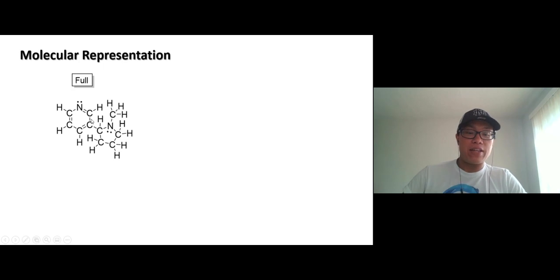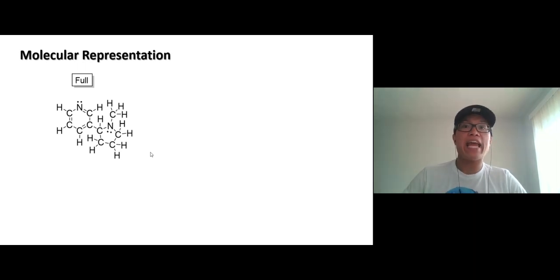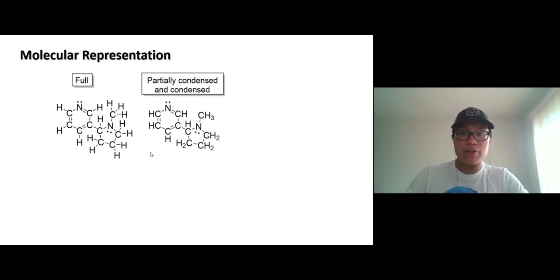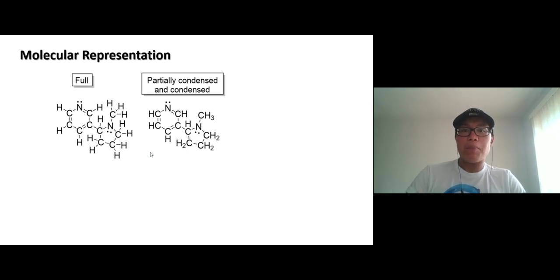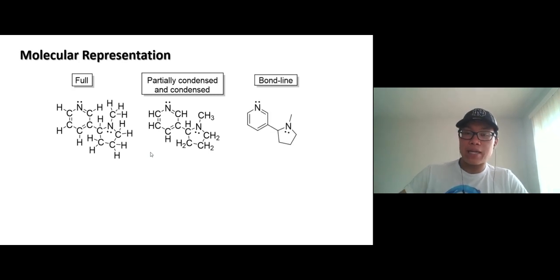A larger molecule gets even more complicated than that. So we try to come up with a representation of the molecule that's more convenient and takes less time to draw. We call it a partially condensed or condensed structure. But it still gets complicated with a larger molecule, so we try to minimize time and make it more convenient by drawing a bond line structure.